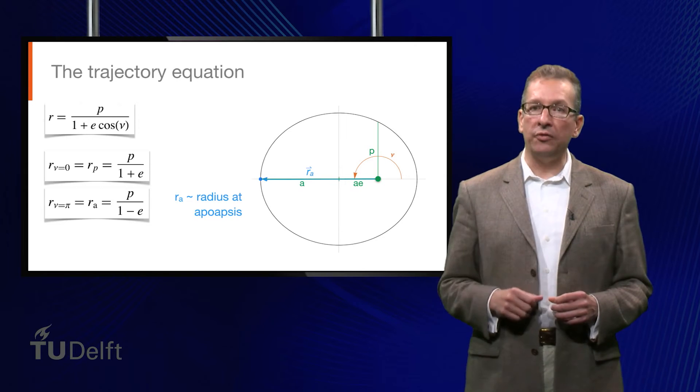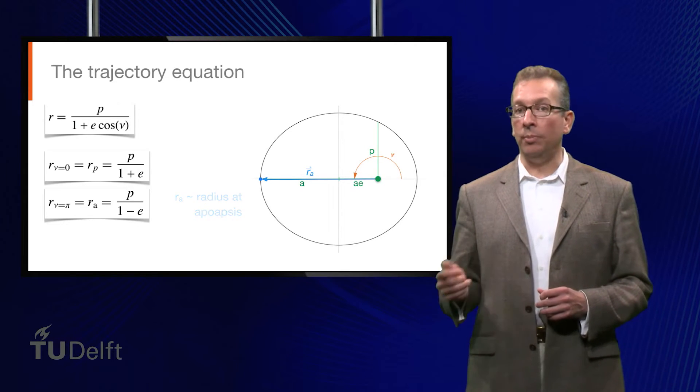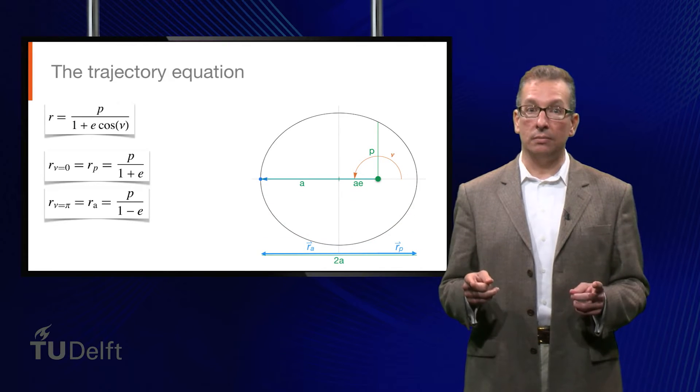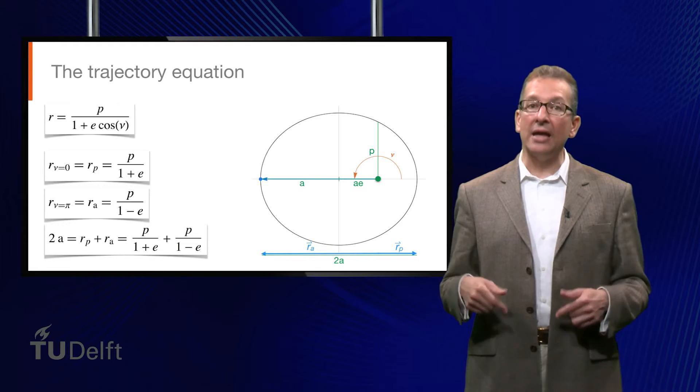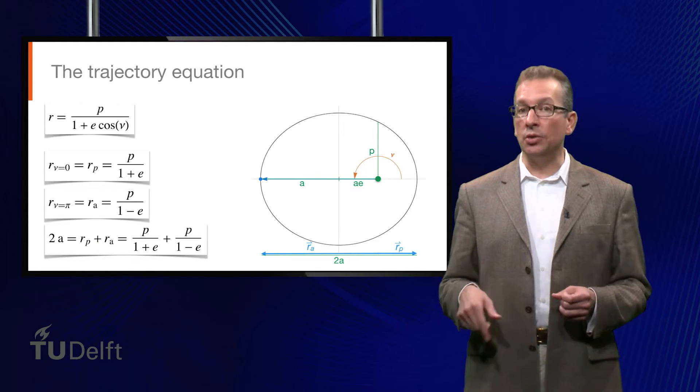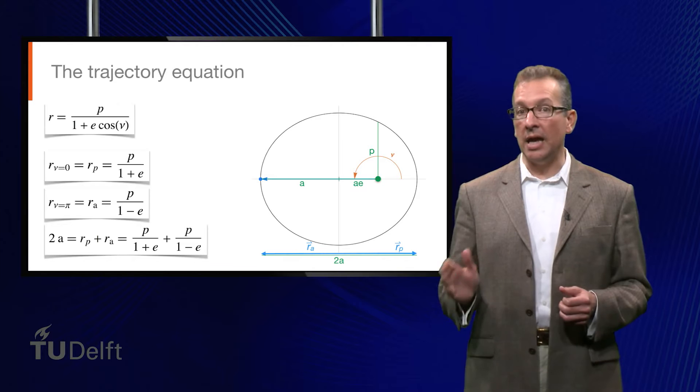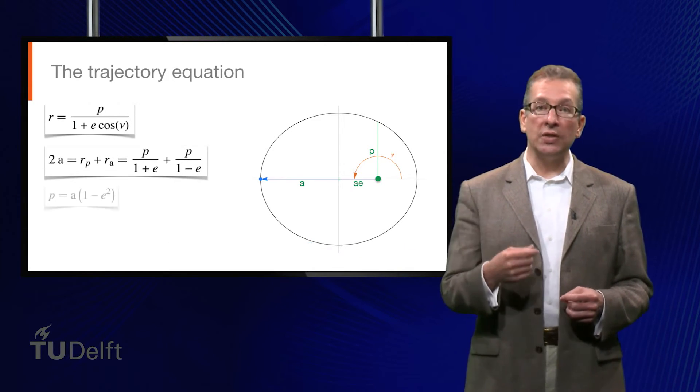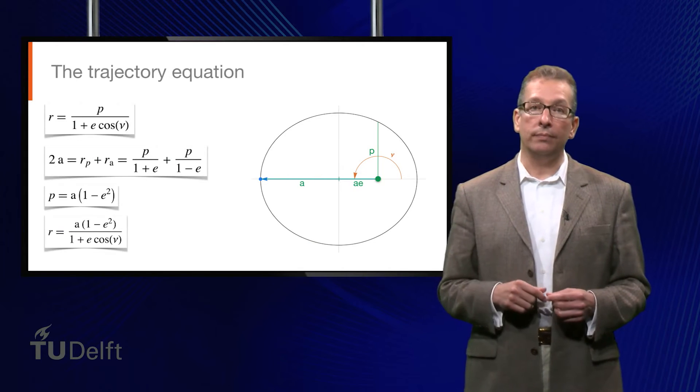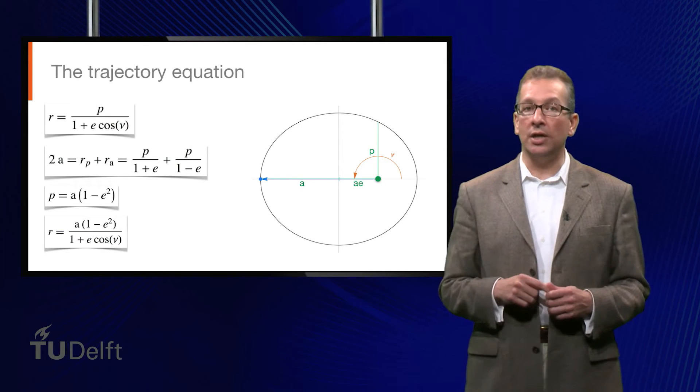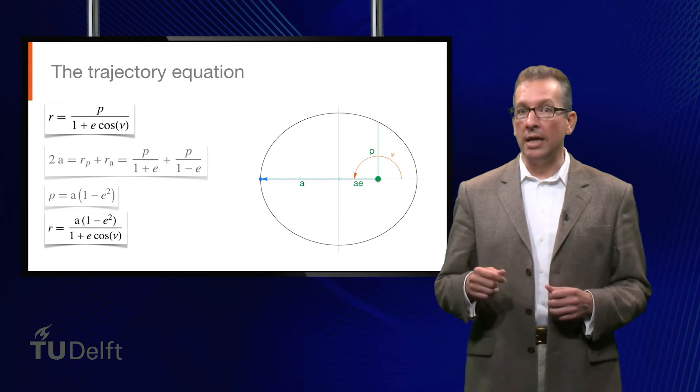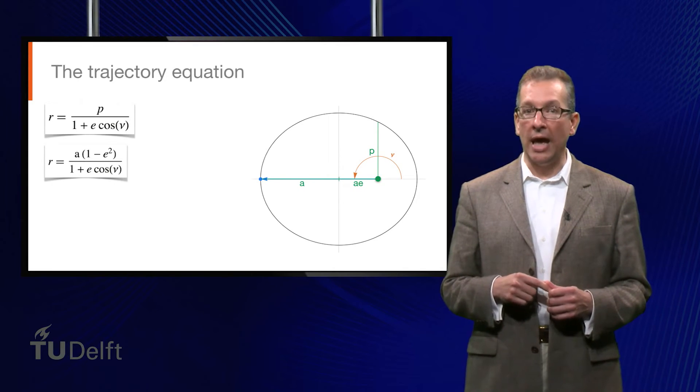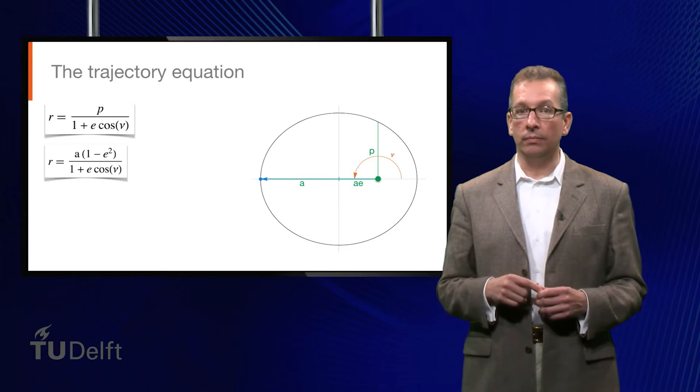Fine. Now, if you add up the lengths of rp and rA, they have the same length as the major axis, which is 2a. So we set that in an equation which, after substituting from above, contains a, p, and e. Then we solve for p, which is equal to a times 1 minus e squared, and substitute that back into the trajectory equation. Now we have an expression for r which only depends on the three Keplerian orbital elements: a, e, and nu that we introduced above.